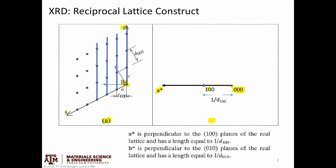A* is given a length of 1 over the D spacing of the 1, 0, 0 planes. Remember, the D spacing of 1, 0, 0 is not the same as length A — it's the perpendicular distance between one plane and another in that family. So D(100) is one unit of length, and A* equals 1 over that distance. The direction is perpendicular to the 1, 0, 0 planes, so this vector here is perpendicular to those planes — that's the same direction as our A* reciprocal lattice vector.